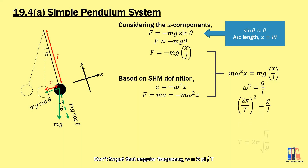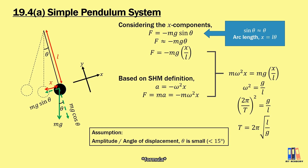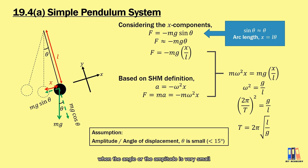Since angular frequency ω = 2π/T, rearranging gives the period T = 2π√(L/g). This formula is only valid when the angle or amplitude is very small — it is suggested to be less than 15 degrees.